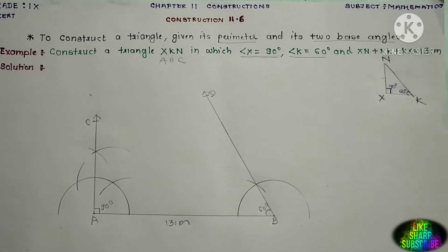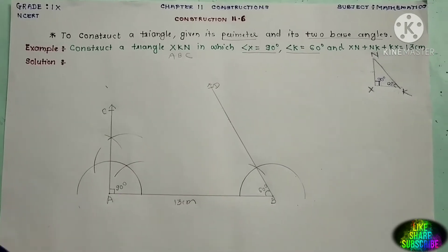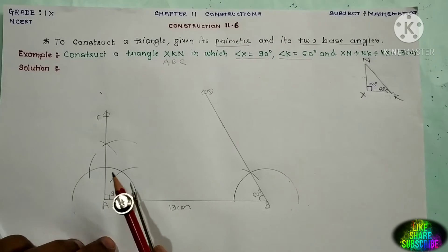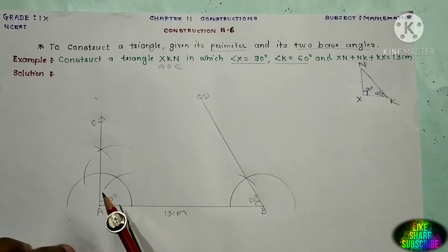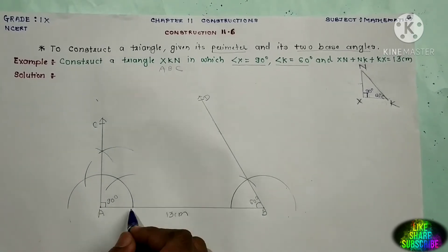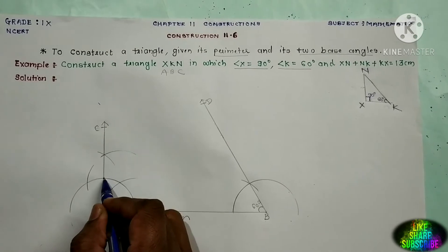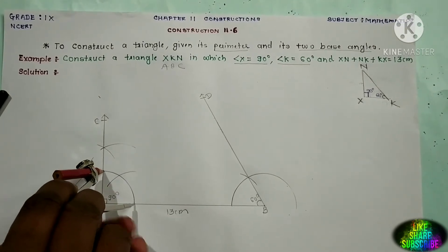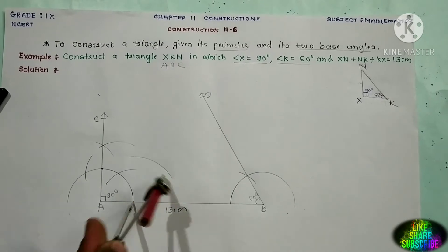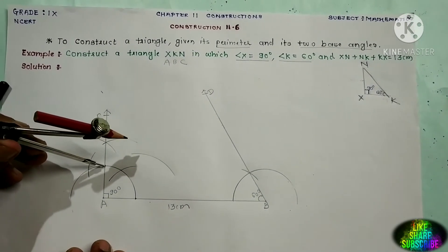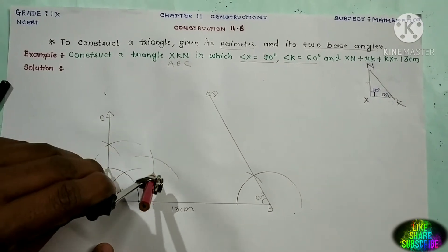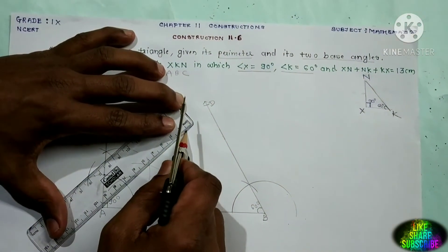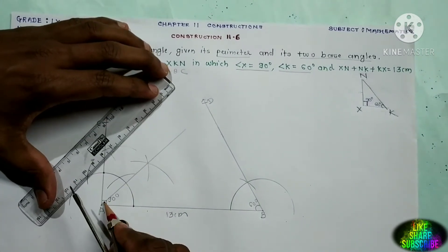Next step is to bisect this 90 degree. Bisect means to divide into two equal parts. So 90 divided by 2 gives 45 degree. To get 45 degree, choose the distance from this point, and mark one arc. This gives the 45 degree bisector ray AF.